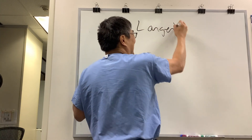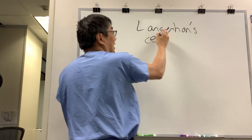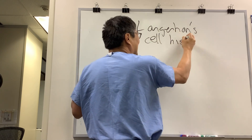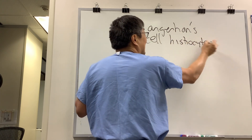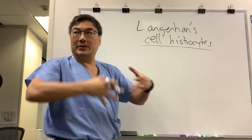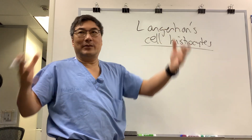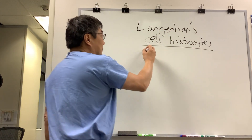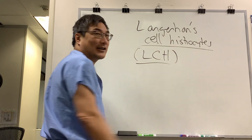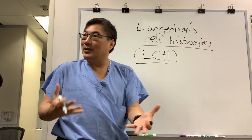Today we're going to be talking about a very unusual condition which sometimes comes to ophthalmology: Langerhans cell histiocytosis. The Langerhans cell is a form of dendritic cell in the immune system. Its job is to go around and find antigens and become an antigen-presenting cell. But sometimes the Langerhans cell becomes a monoclonal process, so it's a form of histiocytic neoplasm.